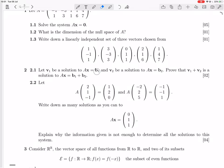Let v1 be a solution to Ax equals b1, and v2 be a solution to Ax equals b2. Prove that v1 plus v2 is a solution to Ax equals b1 plus b2.